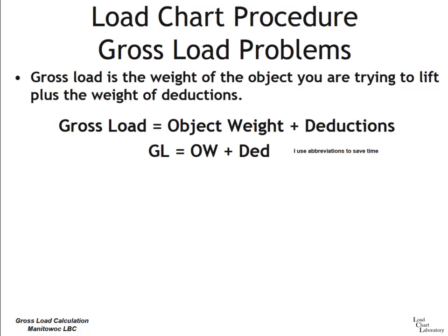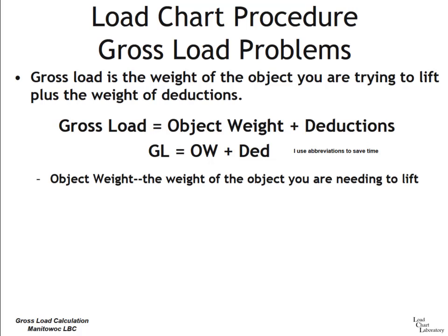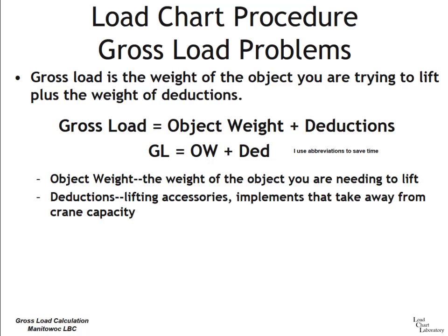I like to abbreviate to save time: GL equals OW plus deductions. The object weight is the weight of the object you're trying to lift — whether it be a bridge beam, a pressure vessel, or an air conditioning unit. Deductions are the lifting accessories and implements that take away from the crane's capacity and add to the weight of the load.